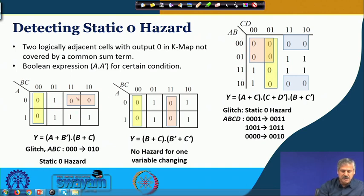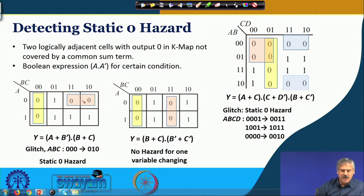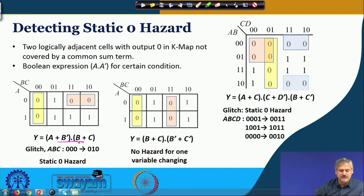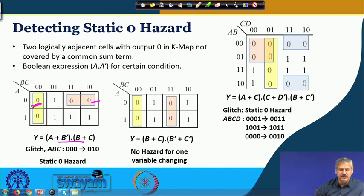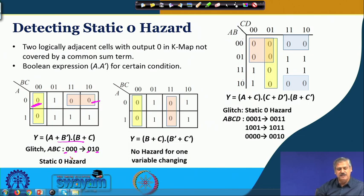Here is an example with this optimized expression. These two 0s and these two 0s are grouped together: a-plus-b-prime is one term and b-plus-c is the other term, and they are ANDed together. There is a potential Static-0 Hazard because this 0 and this 0 are logically adjacent and not covered by one common sum term. The glitch occurs when a equals 0 and c equals 0, and b changes from 0 to 1.